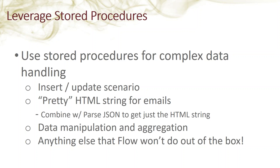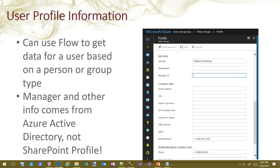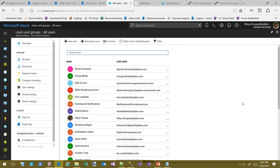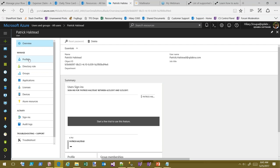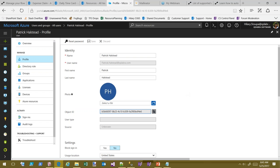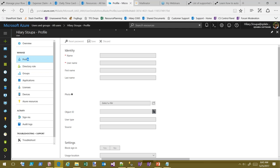If you've got something you can't figure out how to do in Flow, execute stored procedure is probably a good route. You can get user profile information in Flow using the Office 365 Users connector — but be aware: this does not pull from your SharePoint user profile. It uses Azure Active Directory. So if your SharePoint profile has a manager set, Flow won't get that — it has to be configured in Azure AD.